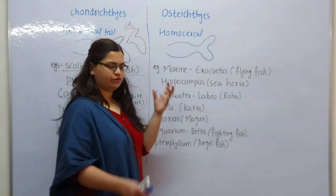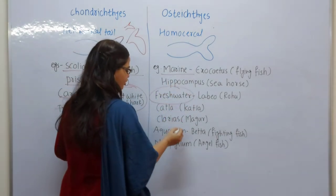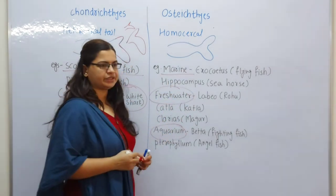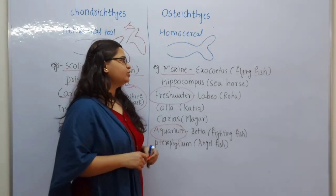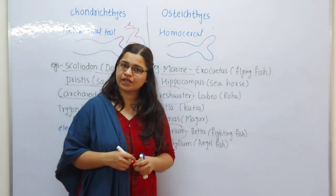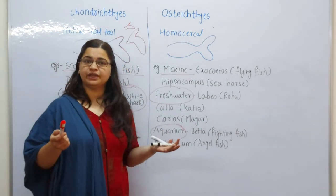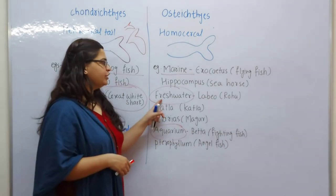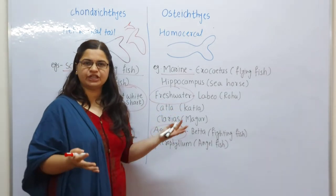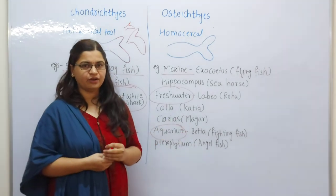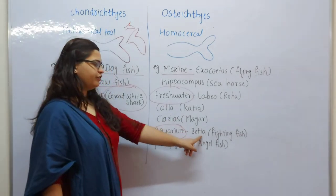For Osteichthyes, there are marine, freshwater, and aquarium examples. Marine examples include Exocoetus (flying fish) and Hippocampus (seahorse). In freshwater, there is Labeo and Catla. Common aquarium fish include Betta (fighting fish), which you may have seen in aquariums.